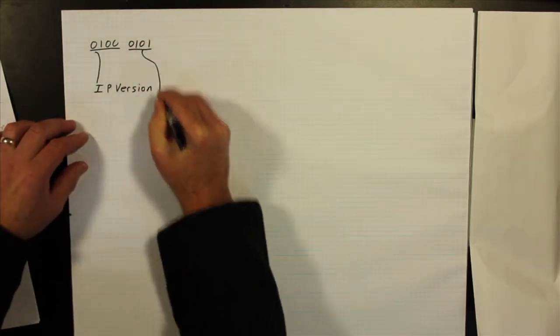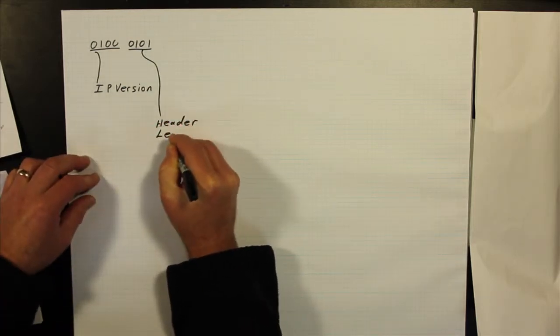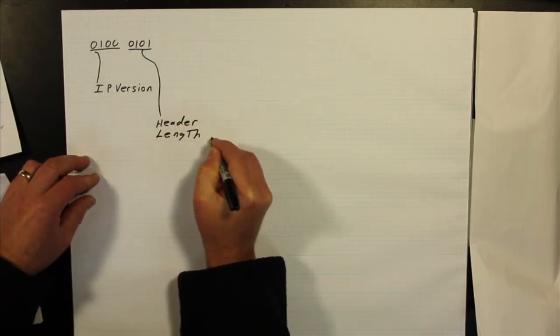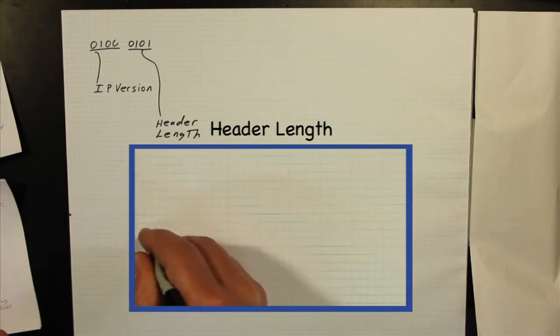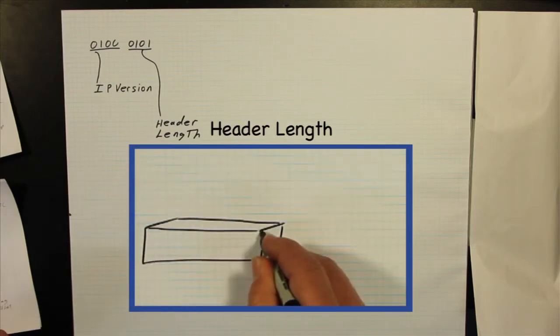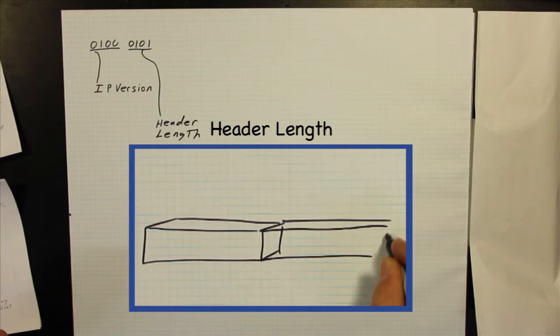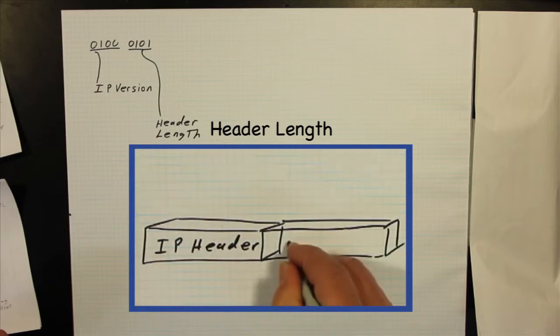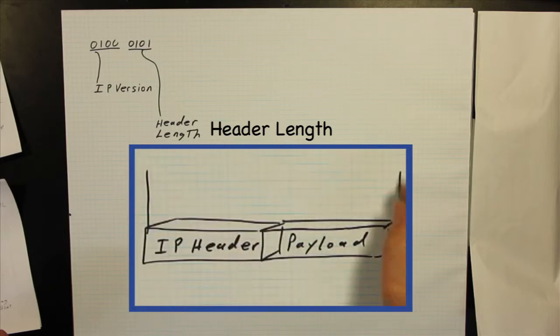The next four bits describe the length of the IP header in 32-bit words. The entire header is made up of a minimum of five 32-bit words. When the length of the header is known, you know where the beginning of the payload is.